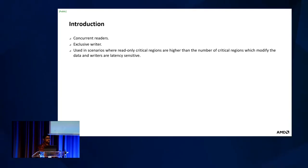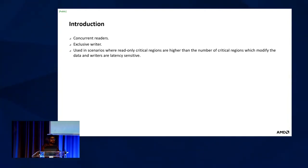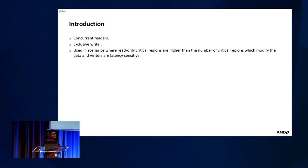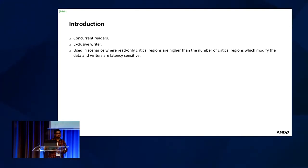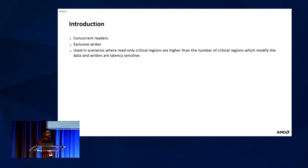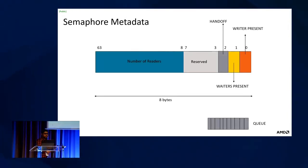RWSM is a sleep lock where the critical sections can sleep. You can have concurrent readers in the critical section at the same time, but there can be only a single writer. RWSM works best in cases where you have multiple reader contexts and fewer writer contexts; otherwise you can use a mutex.